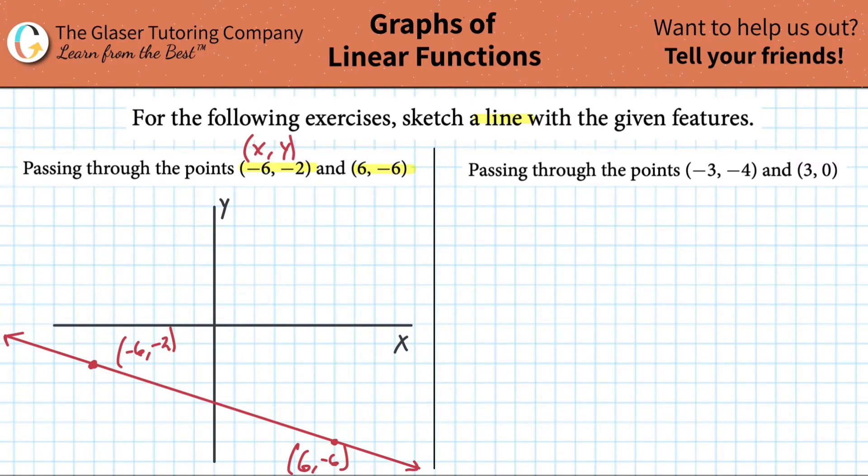Now let's do the same thing for the second question. Let's fly through this. Passing through the points (-3, -4) and (3, 0). So simply plot an axis. I'm going to cheat here a little bit, copy this and paste it on over here. Voila. And then plot now these points. So (-3, -4). I've got to go out 3 units to the left on the x and then down 4 units on the y. So right here.